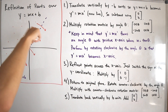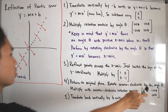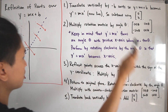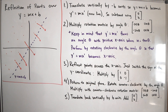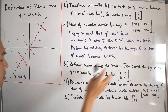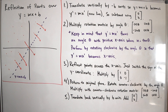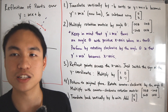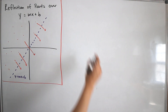Step 4 is to rotate back counterclockwise to return to the original plane, using the rotation matrix cosine θ, sine θ, negative sine θ, cosine θ. Step 5 is to translate back vertically by b units, adding the column vector (0, b), reversing the initial translation.